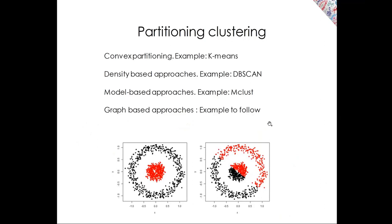There are several different approaches to partitioning clustering. There are convex approaches, an example of which is k-means, which is quite popular. Then there are density-based approaches where a popular example is DBSCAN. Then there are model-based approaches where you suppose an underlying distribution of your data, which M-cluster is an example. And the last category, which is the most popular one in single-cell RNA-seq, is graph-based approaches, where you generate a graph onto your data and figure out how to cut that graph.